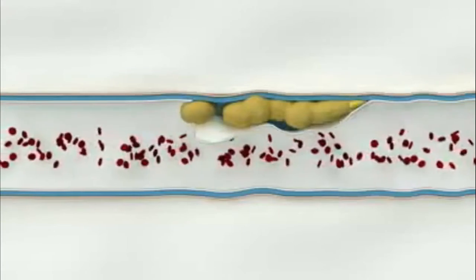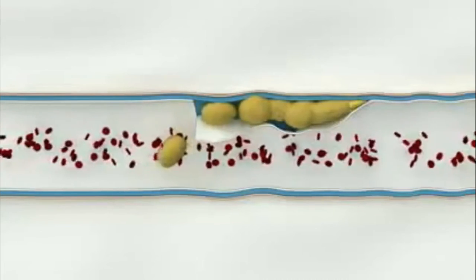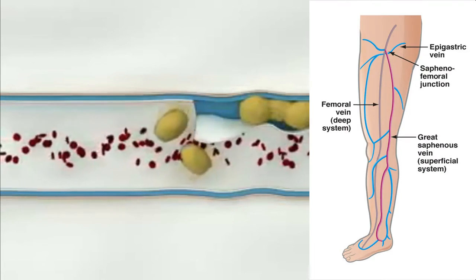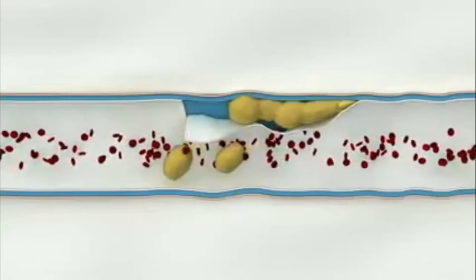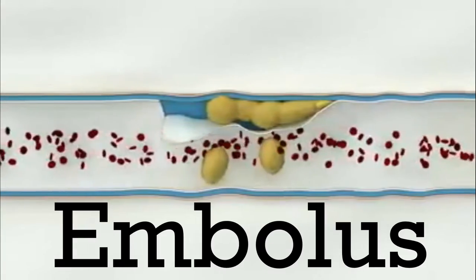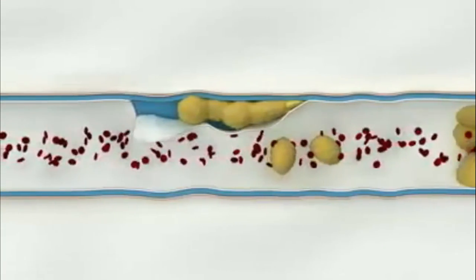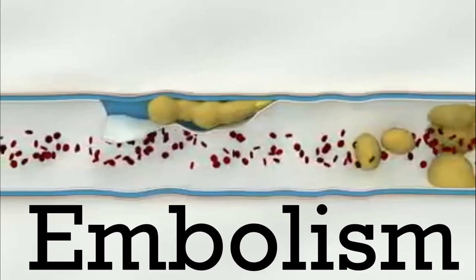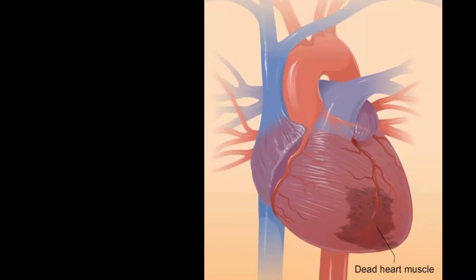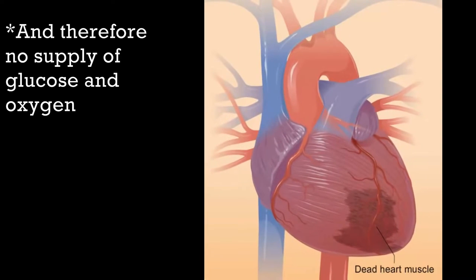Although very uncommon, alternatively, a thrombus can form elsewhere in the body, such as in the deep veins of the leg, and then travel through the bloodstream. This is known as an embolus, and if it blocks the coronary artery, it is called an embolism. In both cases, the cardiomyocytes are not receiving blood and die immediately. The person suffers a heart attack.